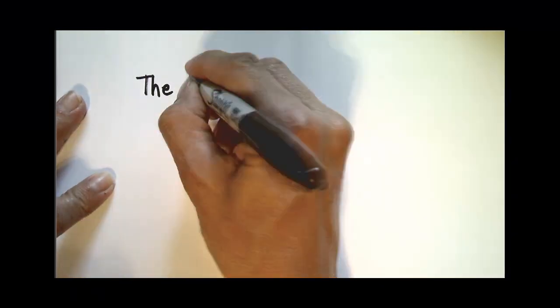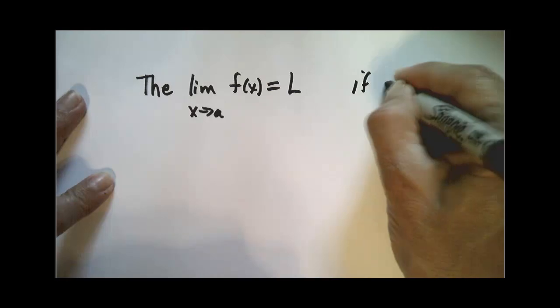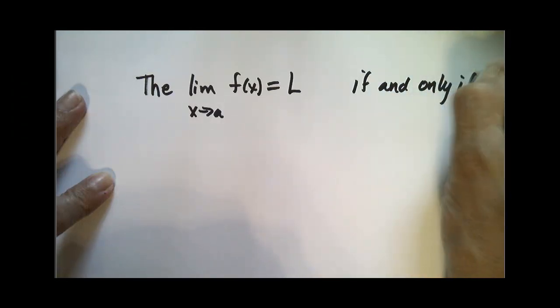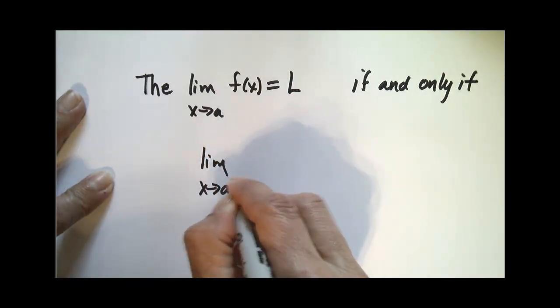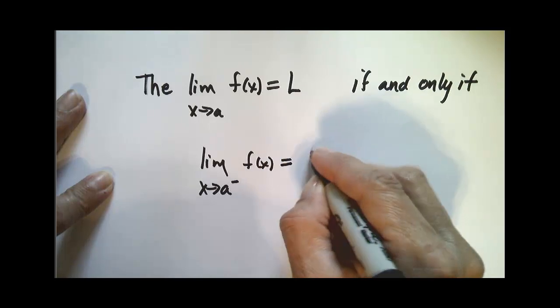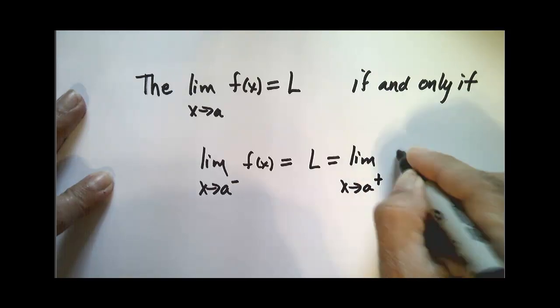So we say, oops I gotta zoom back out. Zooming out, okay. We say the limit as x approaches a of f(x) equals L if and only if—what does that mean?—the limit as x approaches a from the left of f(x) equals L, which also equals the limit as x approaches a from the right.